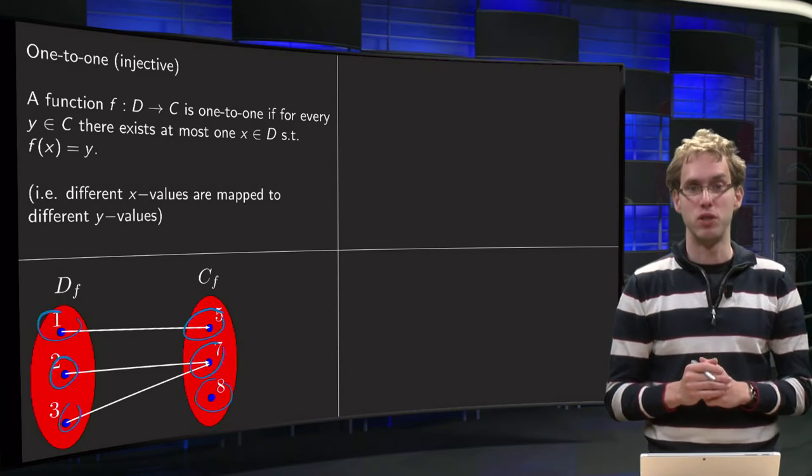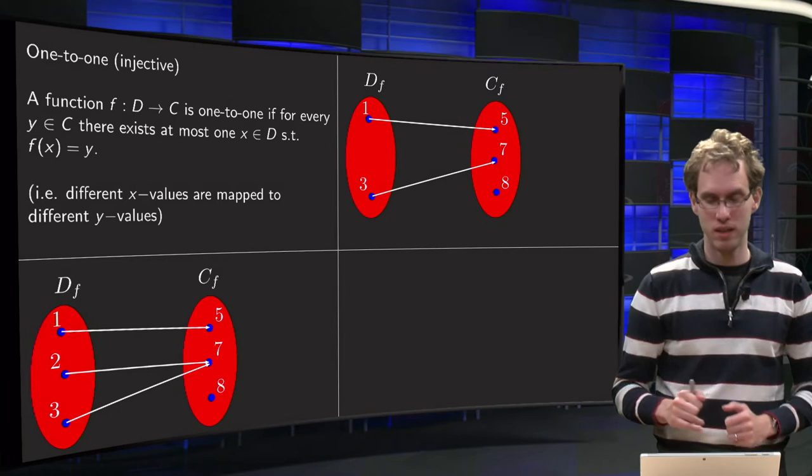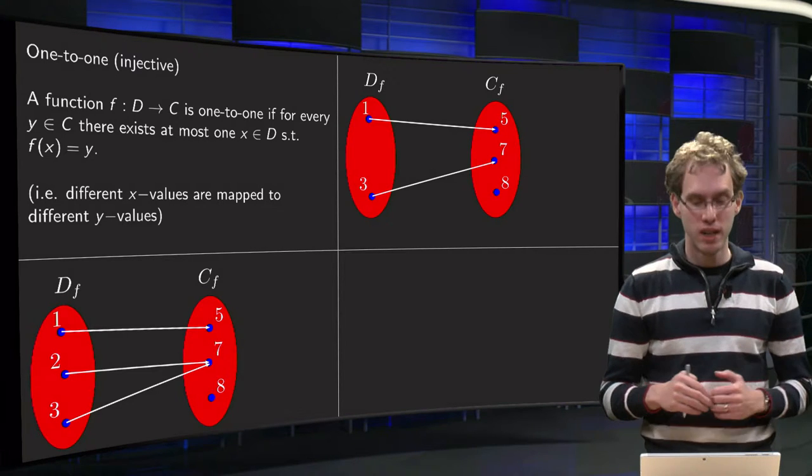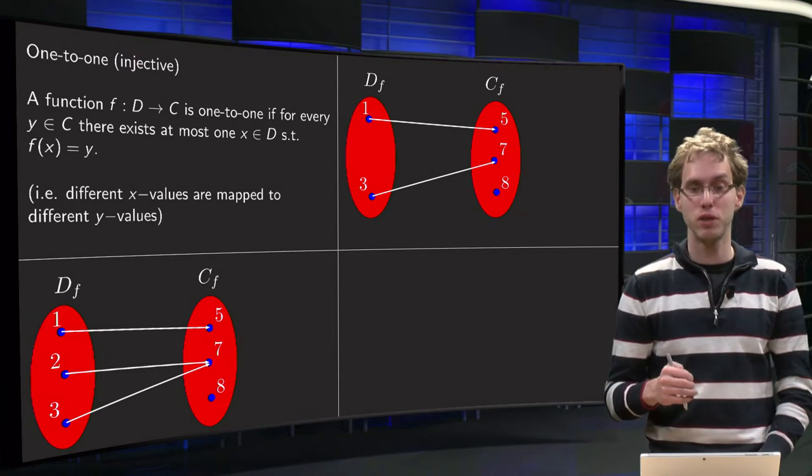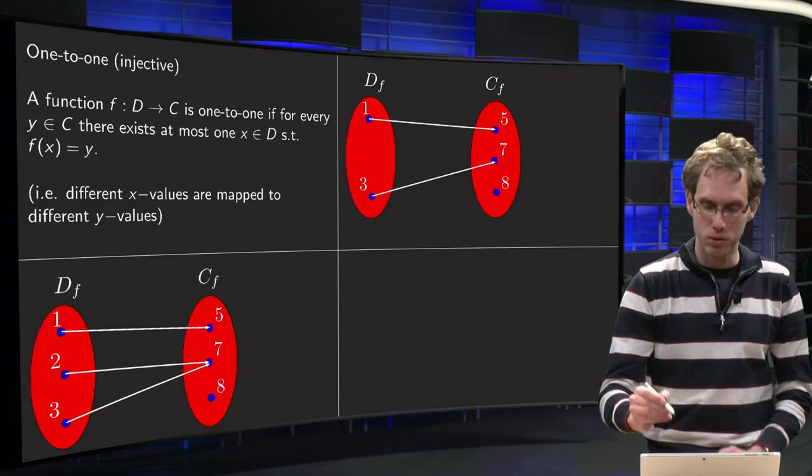Now this function f is not one-to-one. Let's look at the next function, where we just erased one value, the value two from our domain, and we again look whether our function is one-to-one or not. Well, let's start on top now.